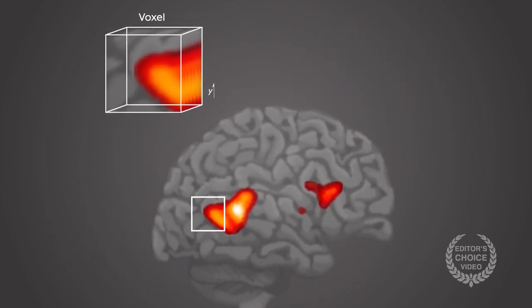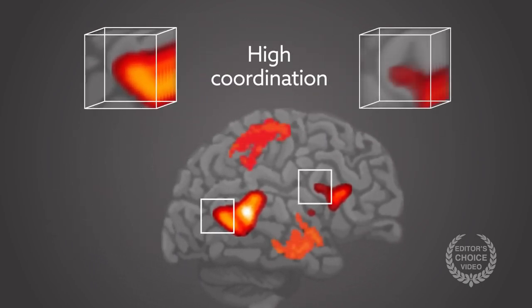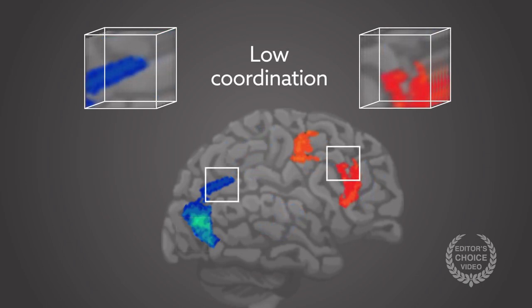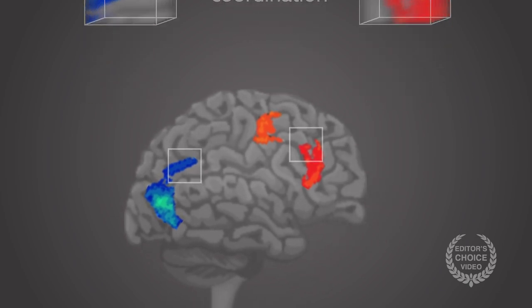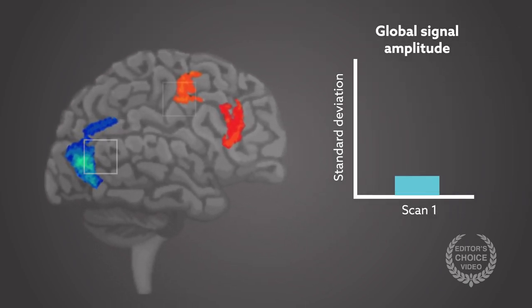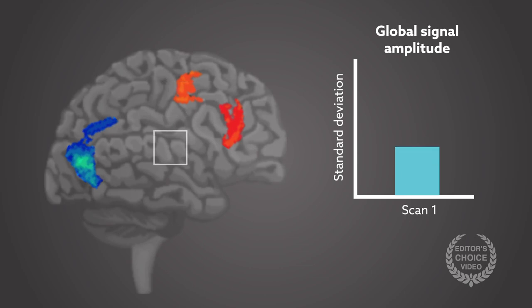When there's high coordination, voxels will be mostly positive or negative, and the sum will be positive or negative. In contrast, if there's less coordination, the voxels across the brain won't match and the values will cancel out. The standard deviation of the global signal over the course of a scan yields the global signal amplitude, which provides a measure of overall brain connectivity.